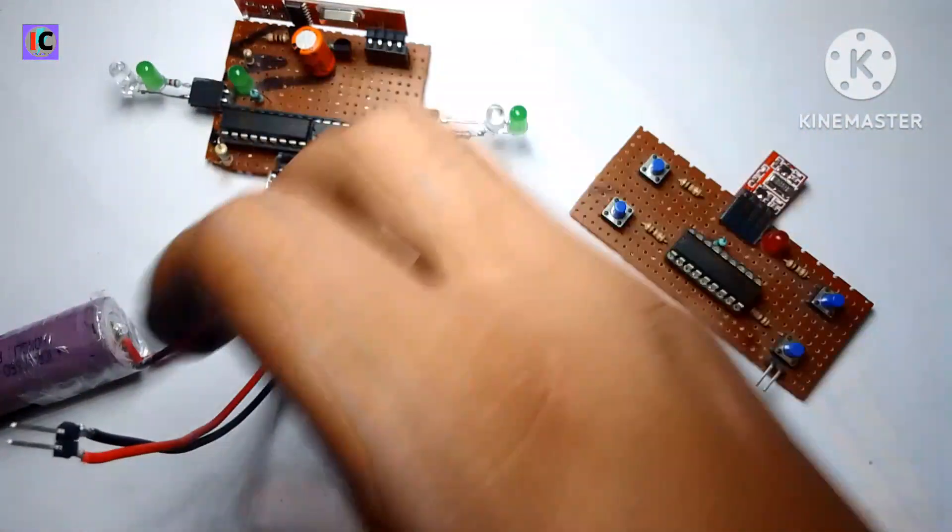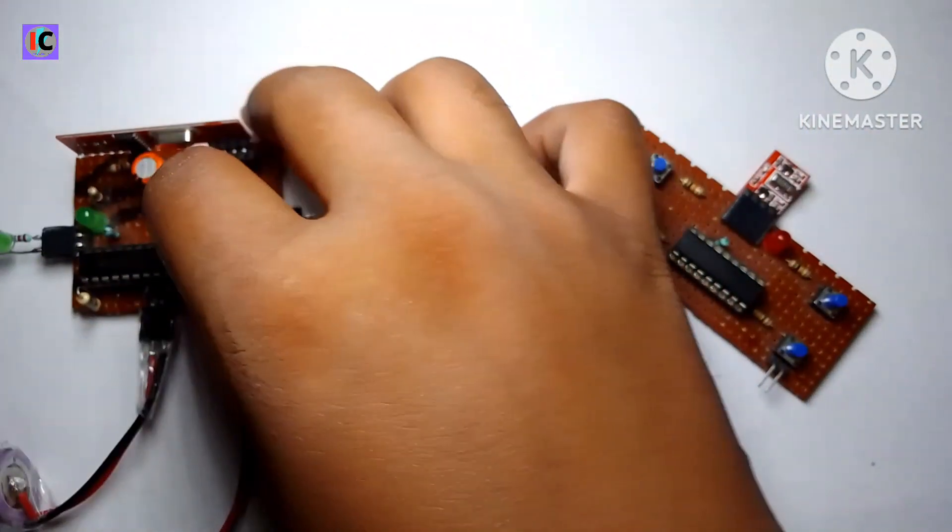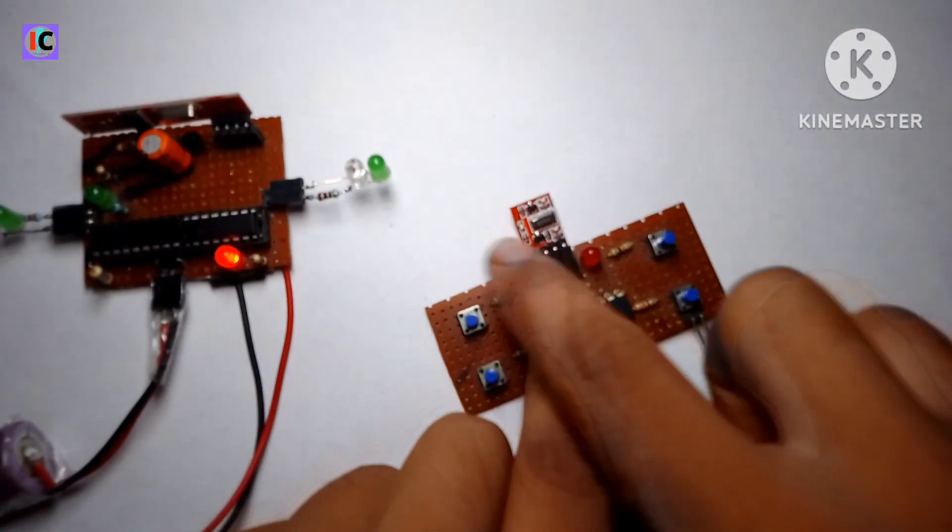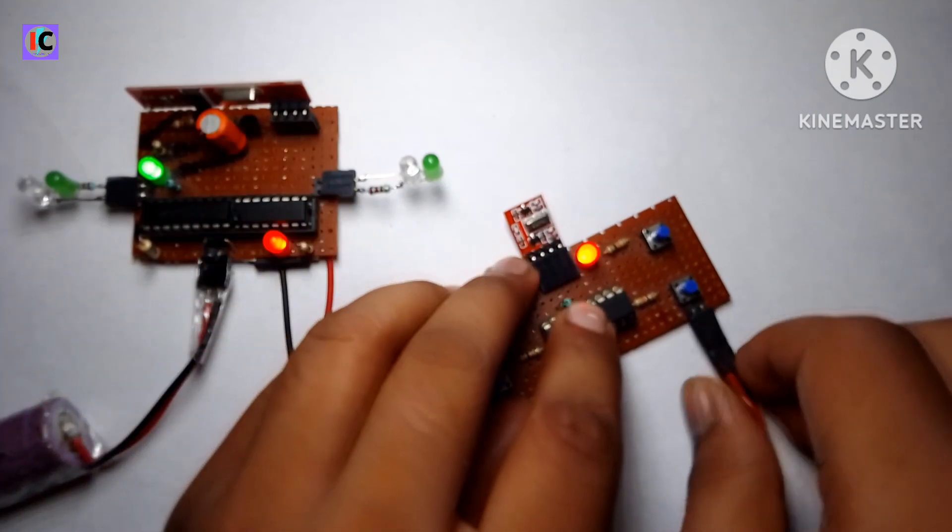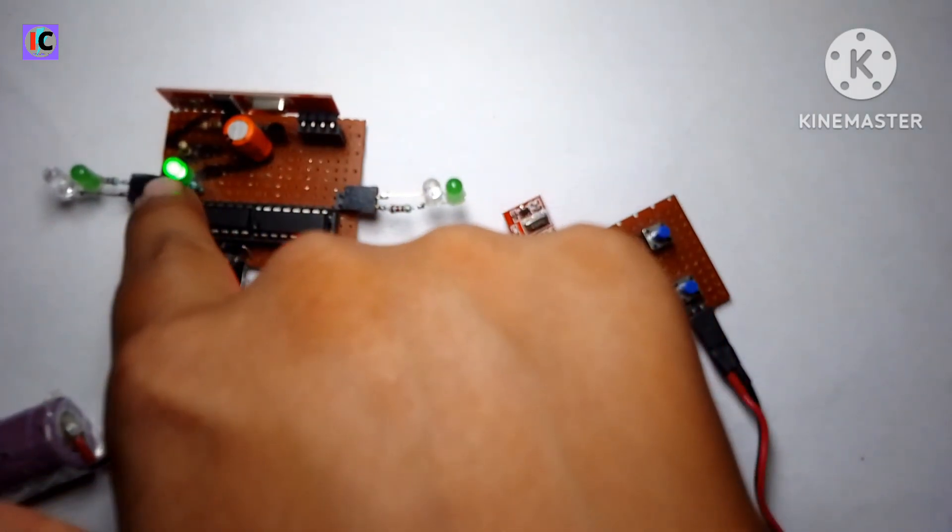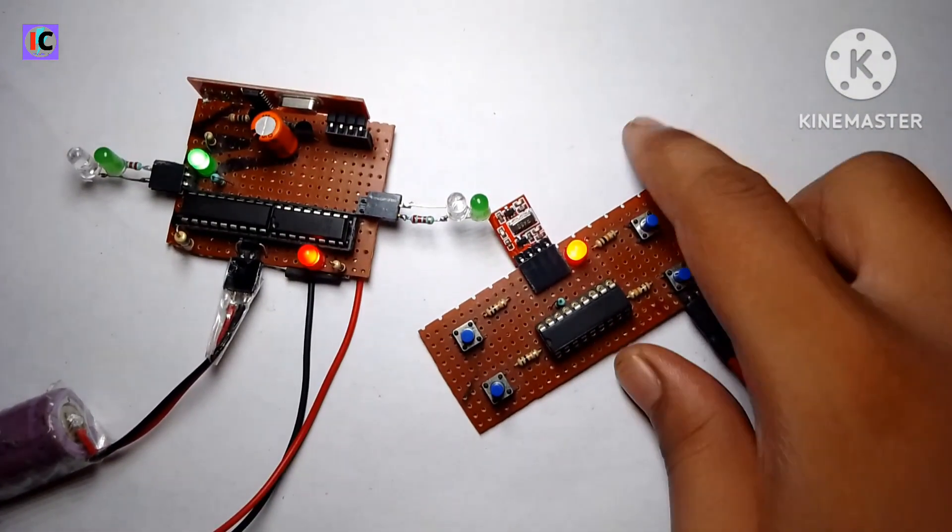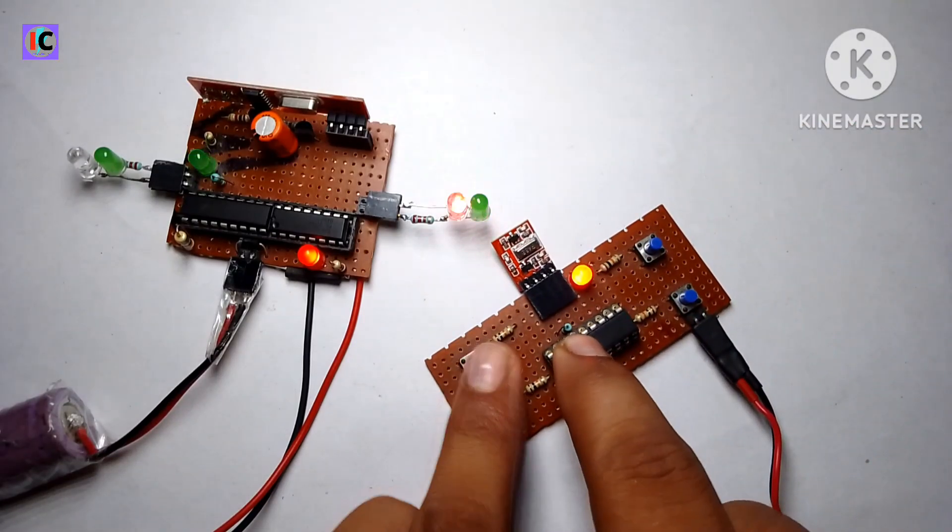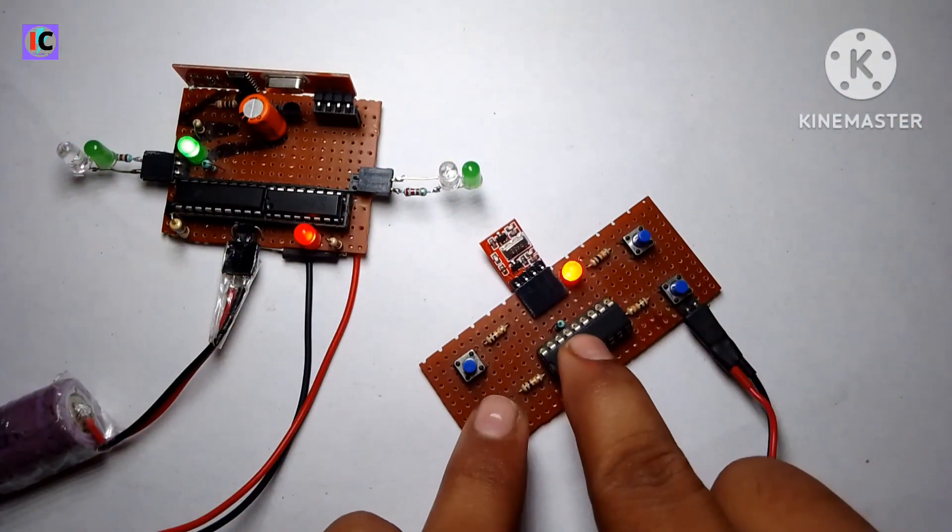If I power the transmitter, the receiver will change the output. You can see that when I press a key on the transmitter, the LED lights up accordingly on the receiver side.